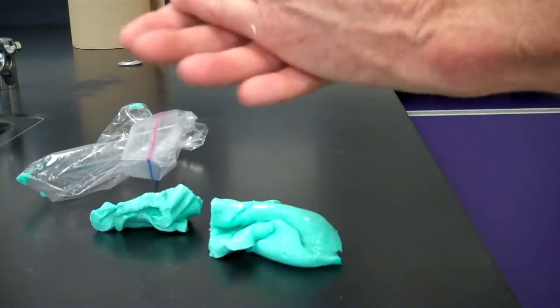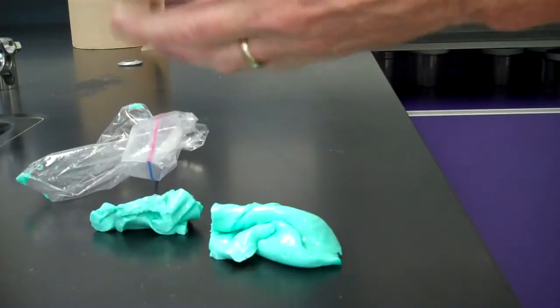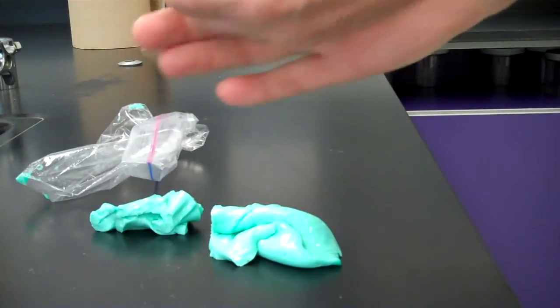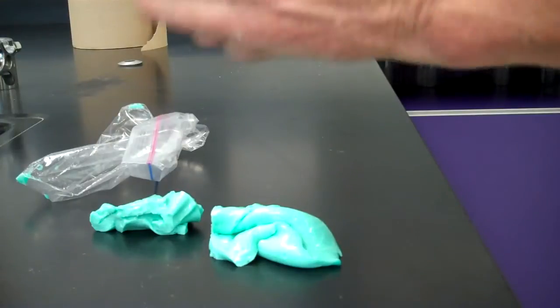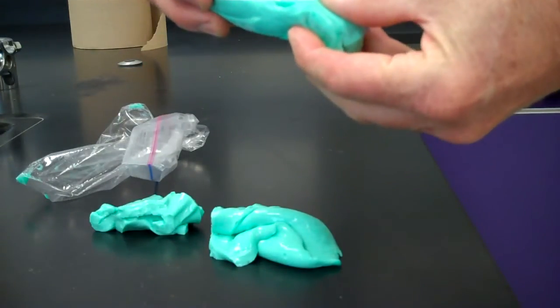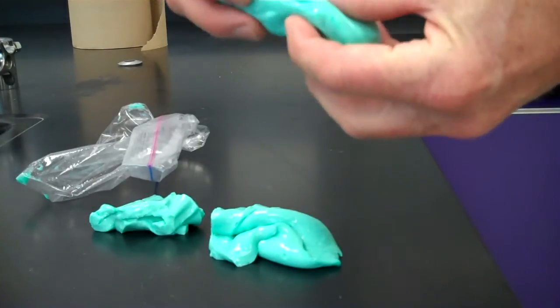Before testing the gloop, you have to squeeze it nice and warmly, warm it up a little bit, get the polymers slowly flowing, rub it all together, and once it's warmed up, then do the testing. So the first one is pull the gloop apart slowly, and the second part is pull the gloop apart quickly.